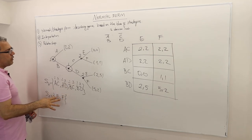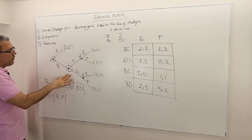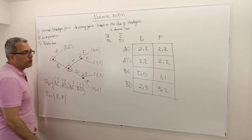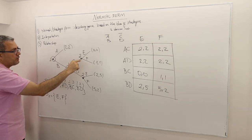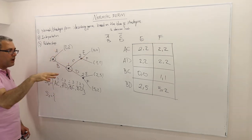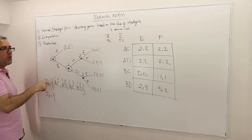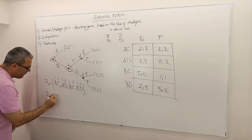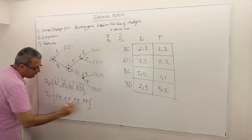Player one's strategy space hasn't changed — he still has four strategies. What about player two? Player two now has two information sets — two separate decision nodes — each with two available actions E and F. So there are two-to-the-power-two, four strategies for player two: EE, EF, FE, and FF.